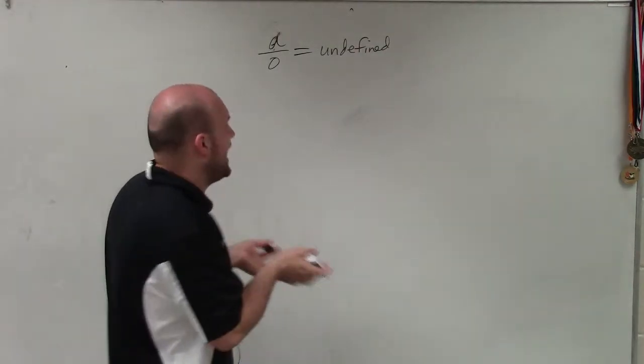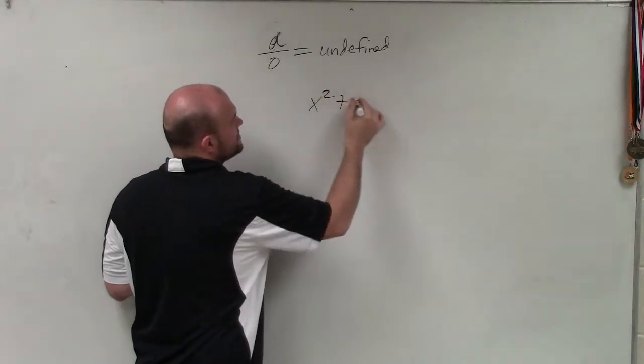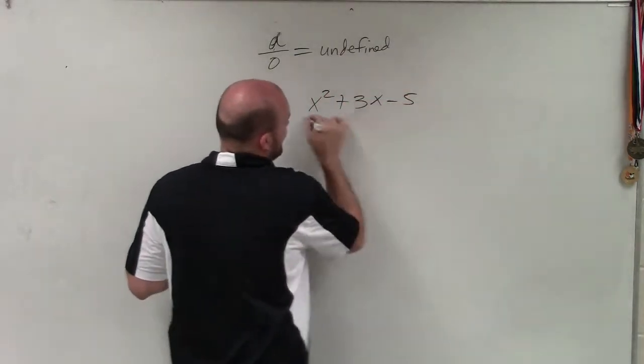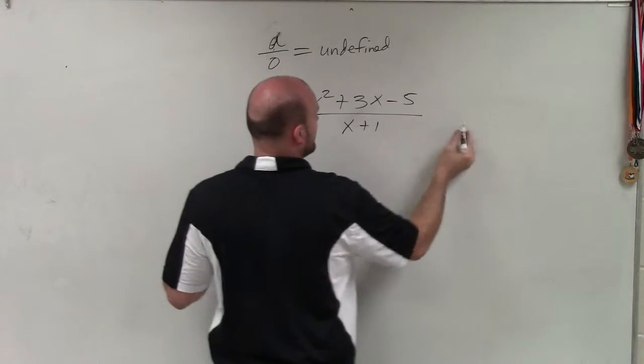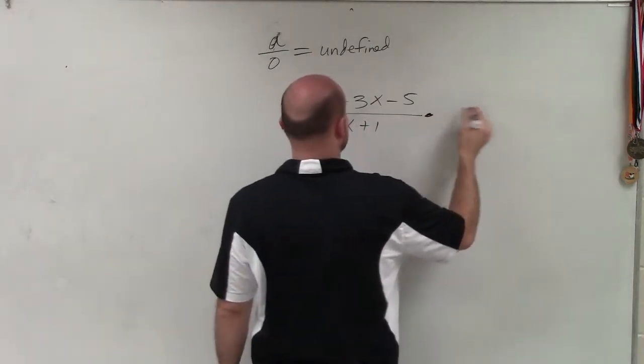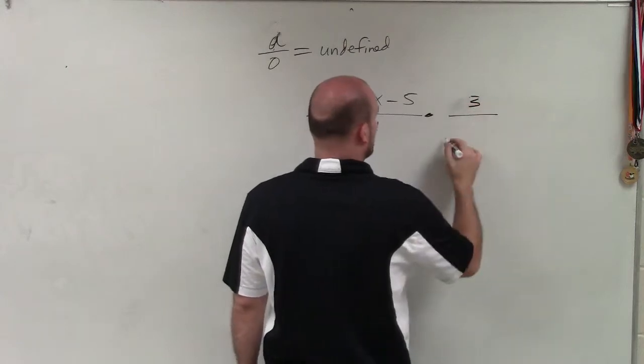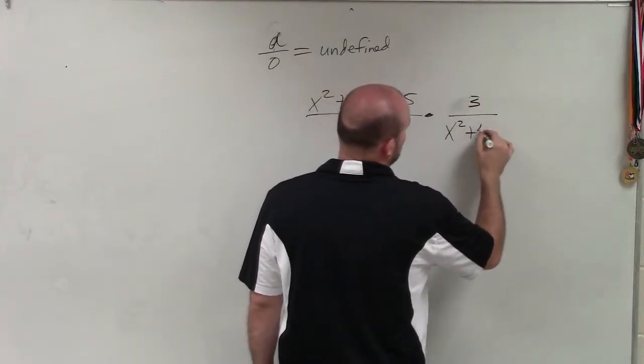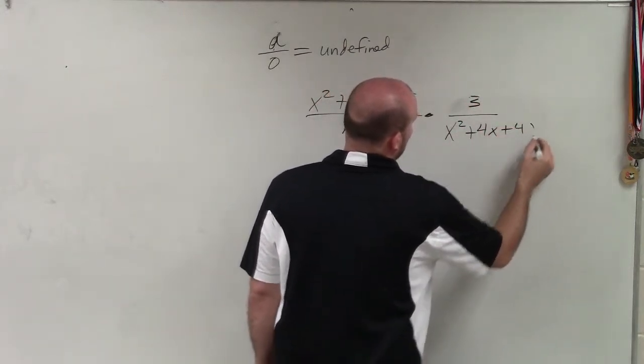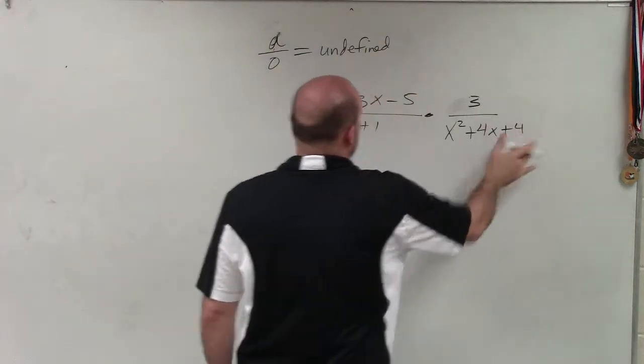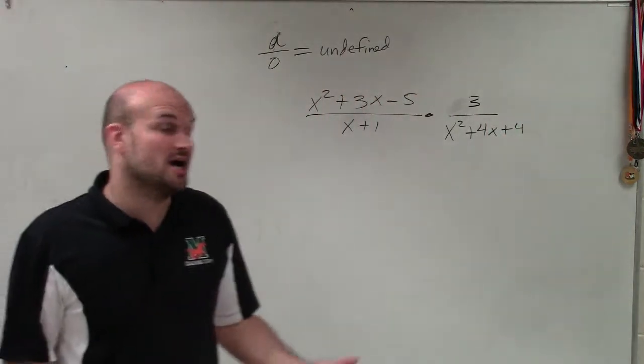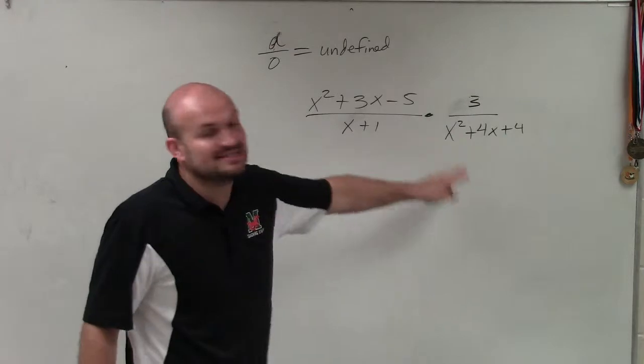So whenever we have a rational expression, you know, x squared plus 3x minus 5 divided by x plus 1 times 3 over x squared plus 4x plus 4. What we want to be able to do is say, alright, well, what are the values that are going to make my denominator 0?